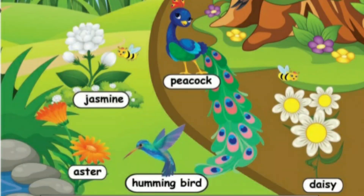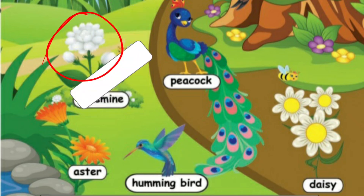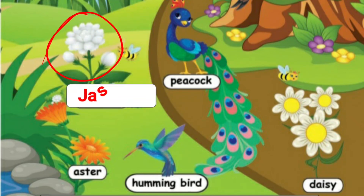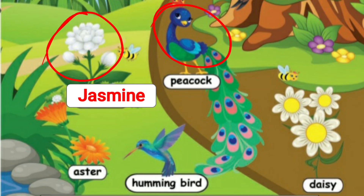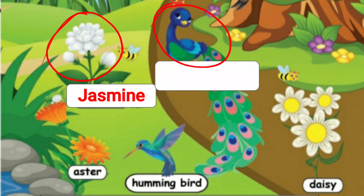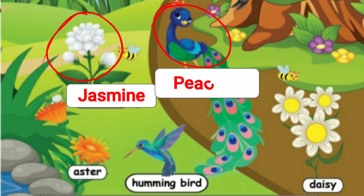And what is this? This is a jasmine. J-A-S-M-I-N-E. Jasmine. And what is this? This is a peacock. P-E-A-C-O-C-K. Peacock.